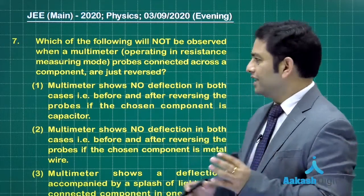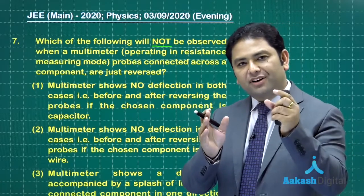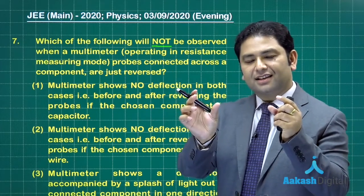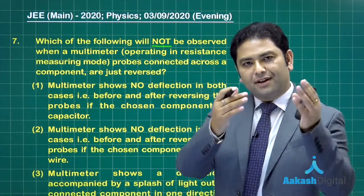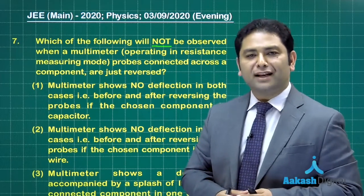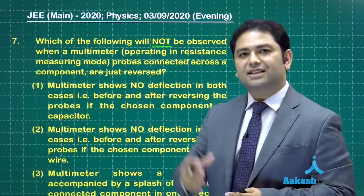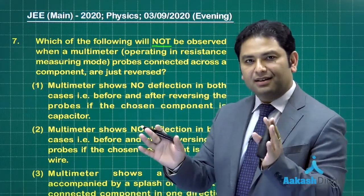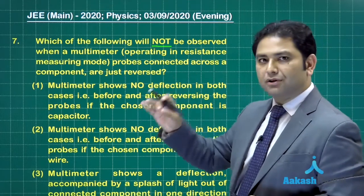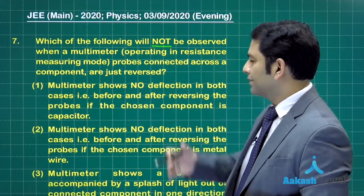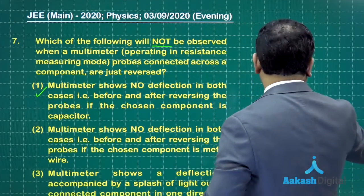In fact, the first option itself is correct because we need to say which is not observed. Now just understand that a battery is connected across a capacitor. When you reverse the probe, in either case the current would be flowing and the multimeter would be registering the value of resistance - voltage per unit current would be resistance. The resistance value would be variable, that's another issue, but it will show deflection while it says it does not show deflection. We are to pick out the improbable event, so option number one would be the correct one.